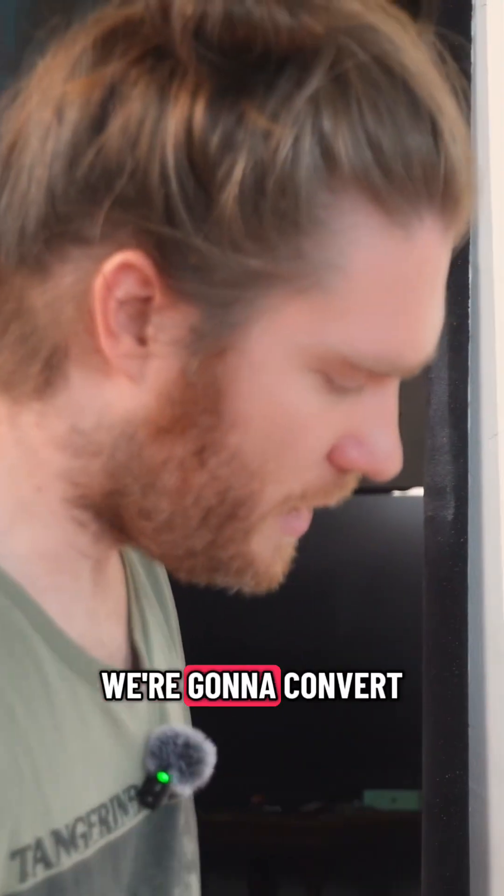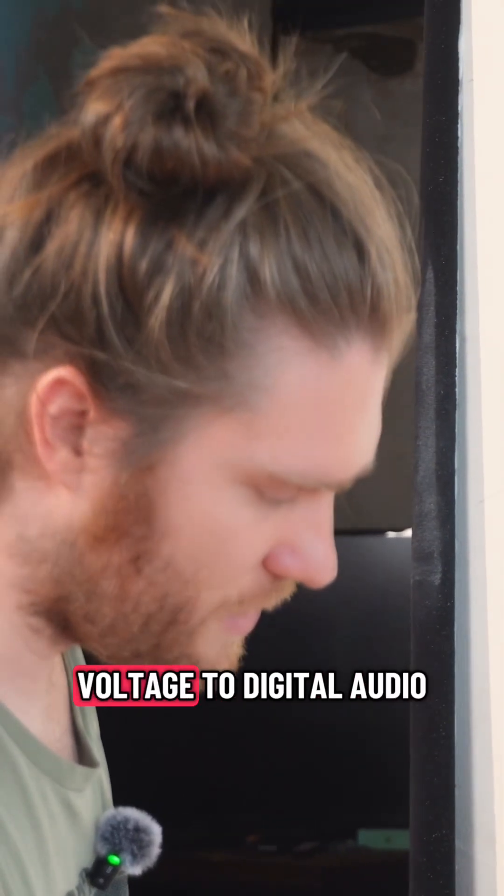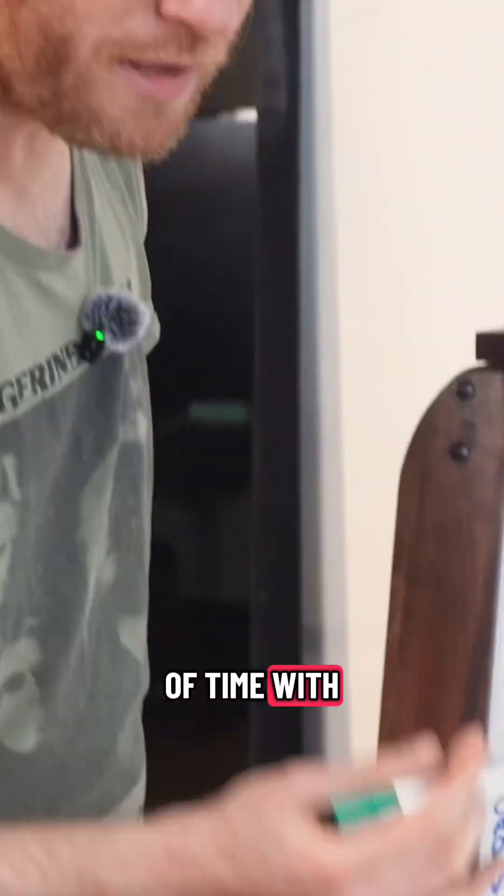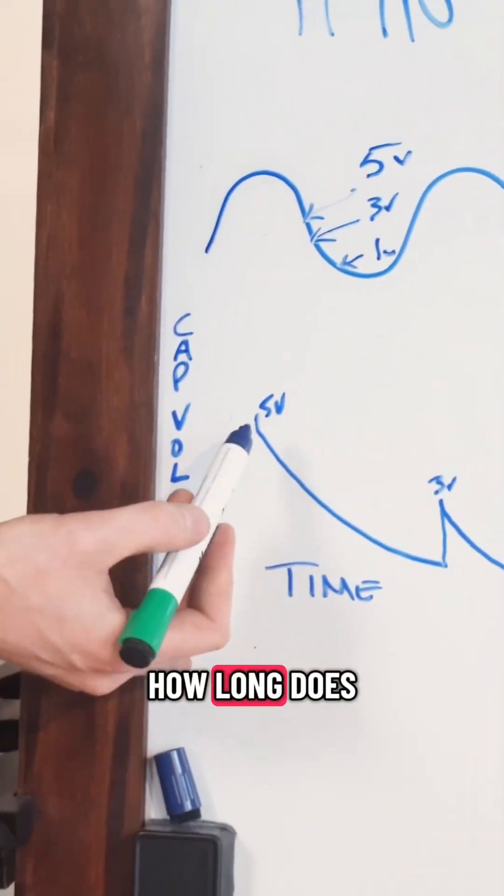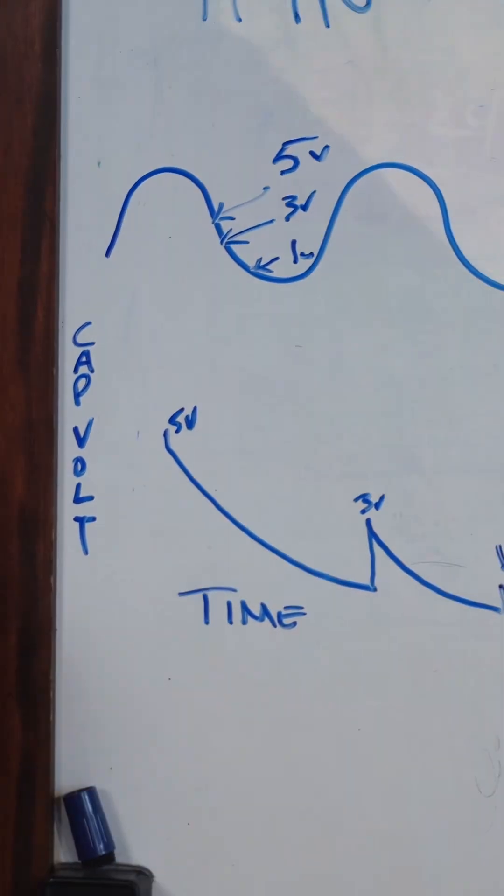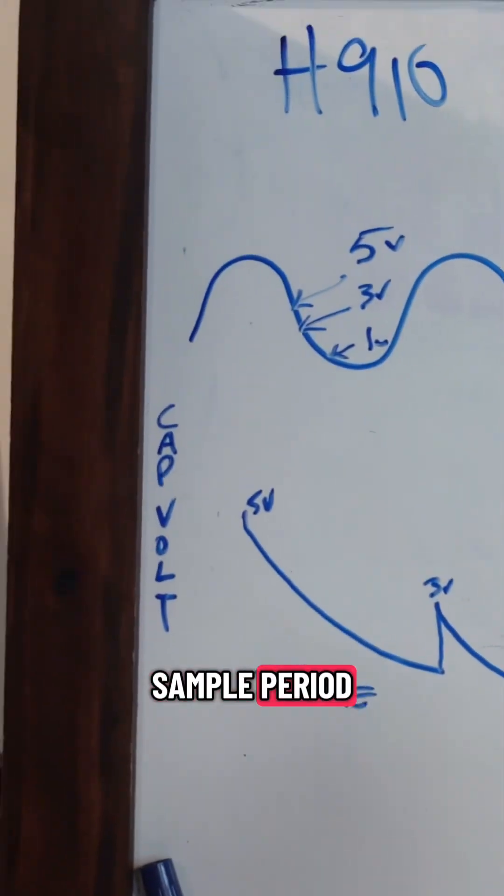The way that we're going to convert this from a voltage to digital audio is we're going to count the length of time with our very fast clock. How long does it take for the cap to go from here to zero volts before our next sample period?